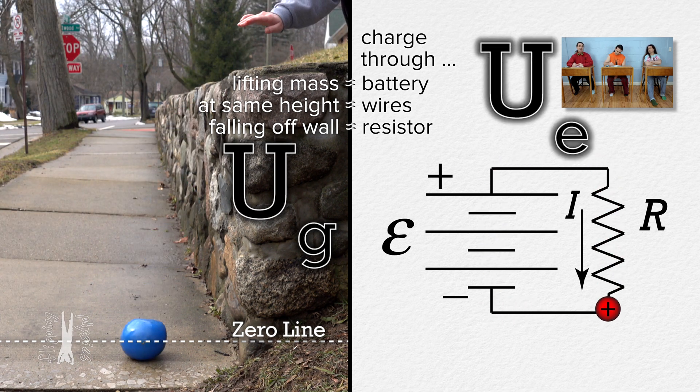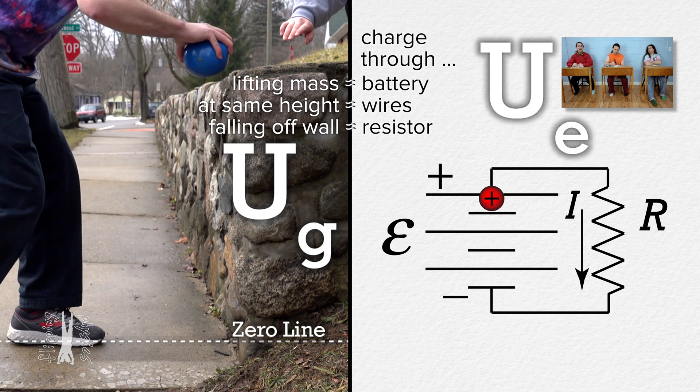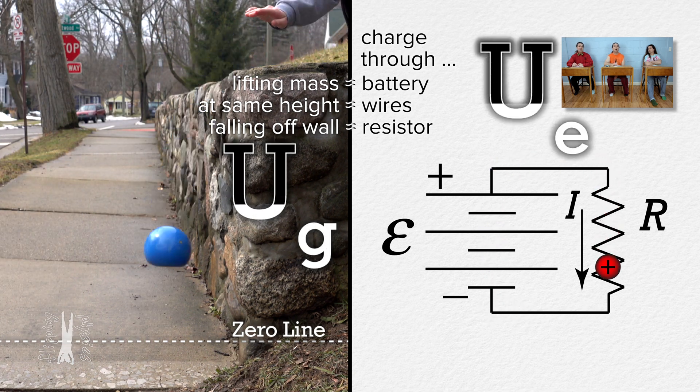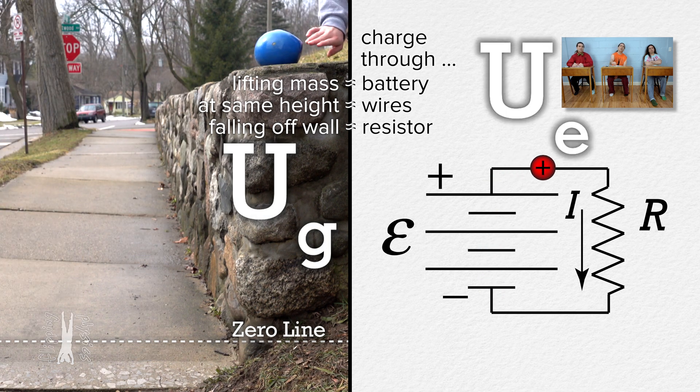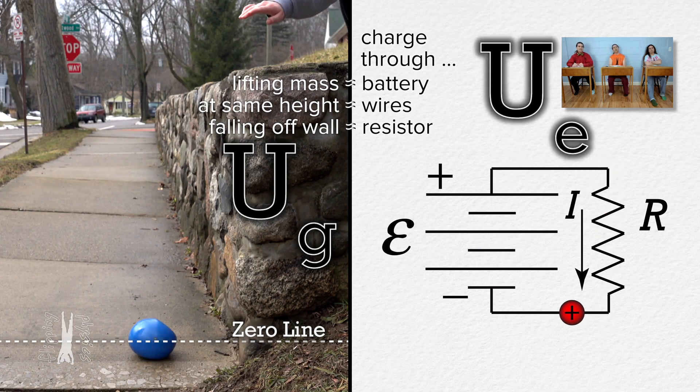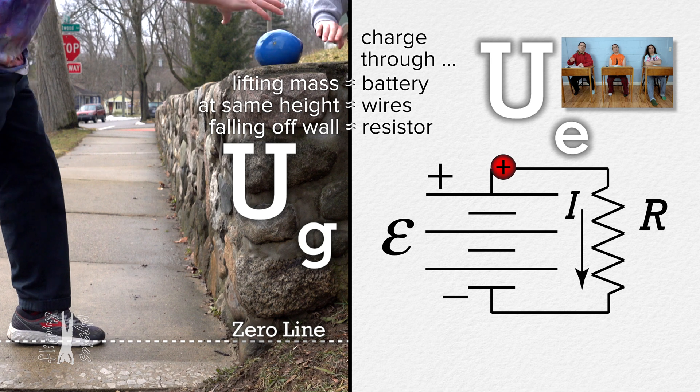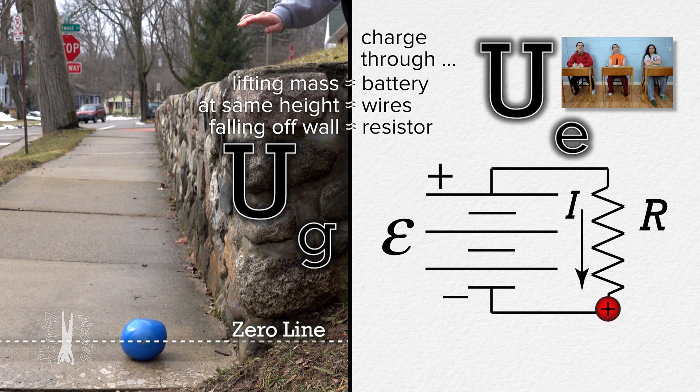And then as the charge moves along the bottom wire, its electric potential energy again stays constant just like again the mechanical energy of the mass stays constant as it sits on the ground. And then the whole process is repeated.